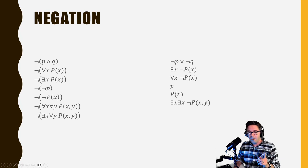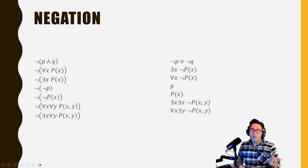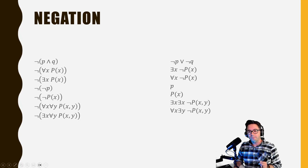Now slightly harder: the negation of 'for every x and for every y, p(x,y) is true' would be 'there exists an x and there exists a y such that not p(x,y) is true.' Even harder: the negation of 'there exists an x for every y such that p(x,y) is true' would be 'for every x, there exists a y such that not p(x,y) is true.'